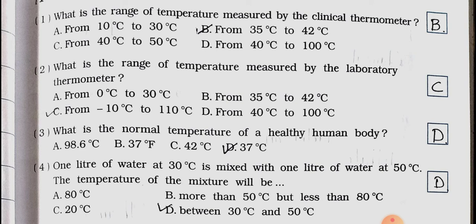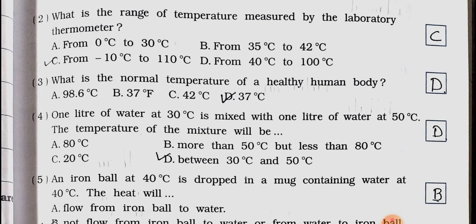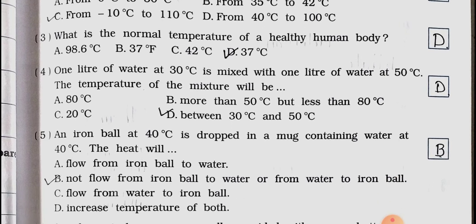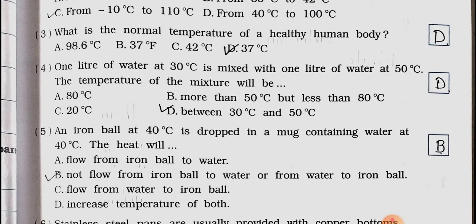Answer is option C, from minus 10 degree Celsius to 110 degree Celsius. Number 3: What is the normal temperature of a healthy human body? A. 98.6 degree Celsius, B. 37 Fahrenheit, C. 42 degree Celsius, D. 37 degree Celsius. Answer is option D, 37 degree Celsius.